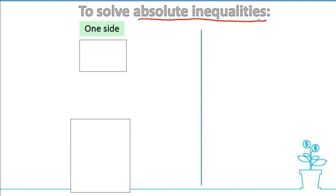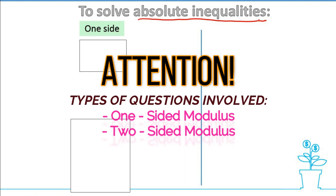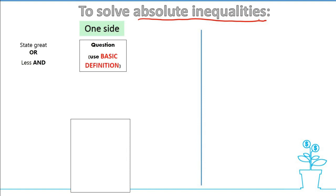We go into the types of absolute inequalities that we could have. The first one is one-sided. So one-sided, the strategy would be we have to use basic definition. Don't forget to state whether it is greater or less than.